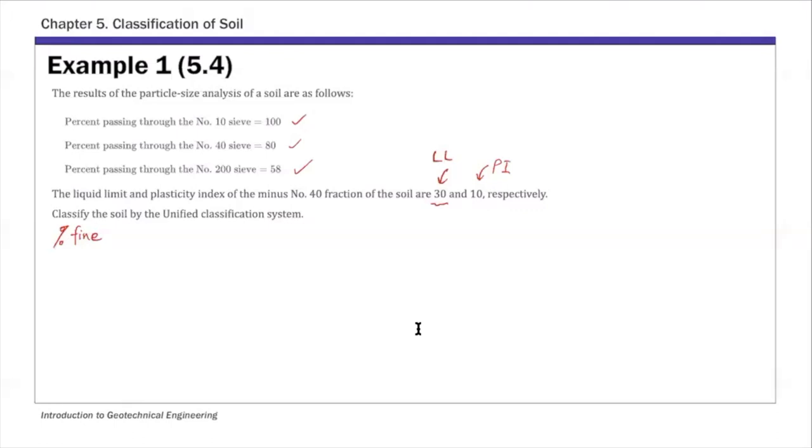So I'm going to start with percent of fine. Percent of fine is simply the percentage passing number 200 sieve for this example. So that's percent passing number 200 sieve.